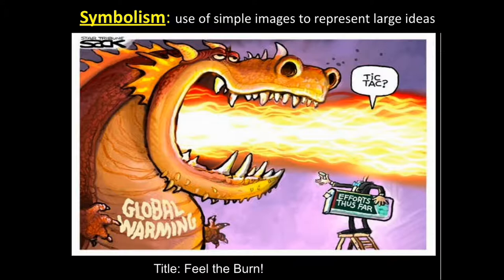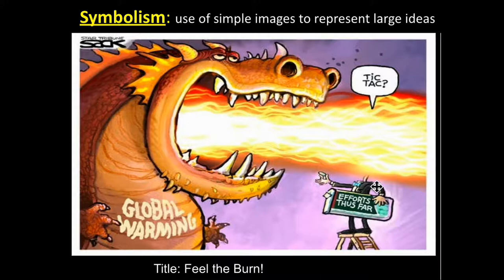You can also use symbols for things that we know in general. Let's take a look at this example: 'Feel the Burn.' When I look at what's going on in this cartoon, I see a dragon that is breathing fire on someone who's trying to offer it something. When I look closer, I notice that this dragon has been labeled as global warming. I can see that what this person is trying to give the dragon says 'efforts thus far' and they're saying they're trying to give it a tic-tac. The idea is that they're trying to solve global warming with very little effort and a very small thing, and that it's clearly not working — instead they're paying the price of physical harm. The symbol of a dragon is highly effective because we all know that it's dangerous and could hurt us.